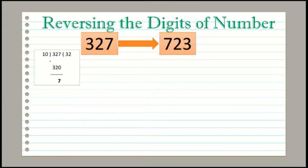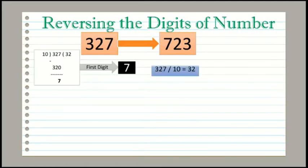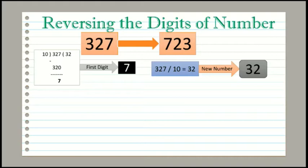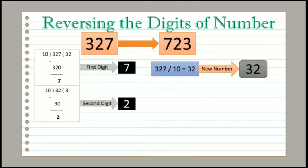After dividing 327 by 10 we get remainder 7, so 7 is the first digit of our reverse number. To get the second digit, first divide 327 by 10 — the quotient is 32, so 32 will be the new number. Now divide 32 by 10: 10 into 3 is 30, so 32 minus 30 is 2. After dividing 32 by 10 we get remainder 2, so 2 is the second digit of our reverse number.